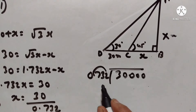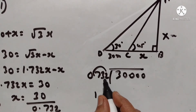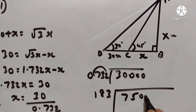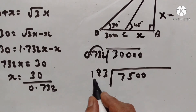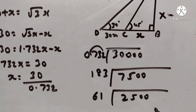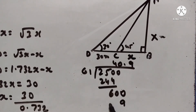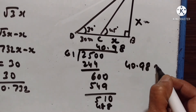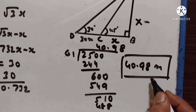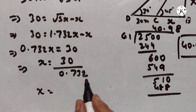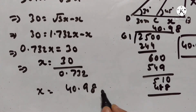Let us divide both numerator and denominator by 4, then by 3. We get 40.98 meters. So x is equal to 30 divided by 0.732, that is 40.98 meters.